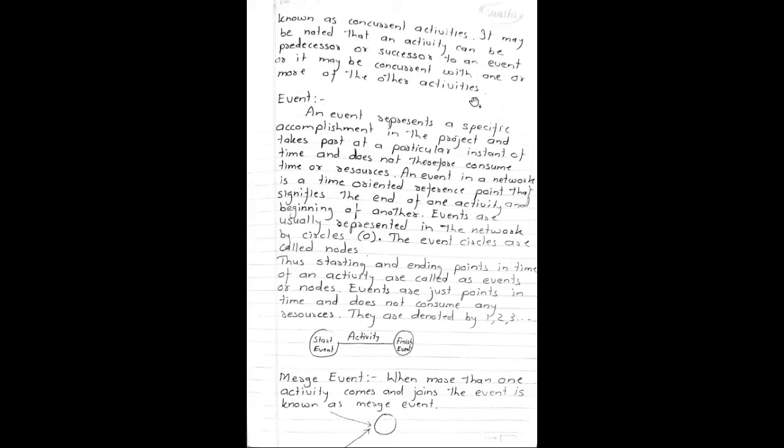Next definition: Event. An event represents a specific accomplishment in the project and takes part at a particular instant of time and does not therefore consume time or resources. An event in a network is a time-oriented reference point that signifies the end of one activity and beginning of another. Events are usually represented on the network by circles. The event circles are called nodes. Thus, starting and ending points in time of an activity are called as events or nodes.